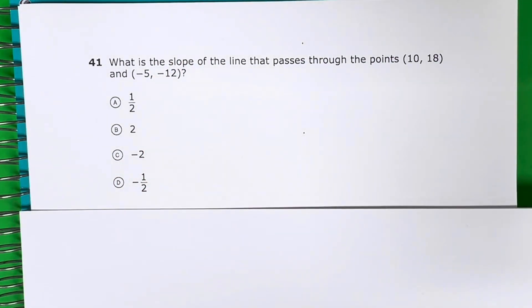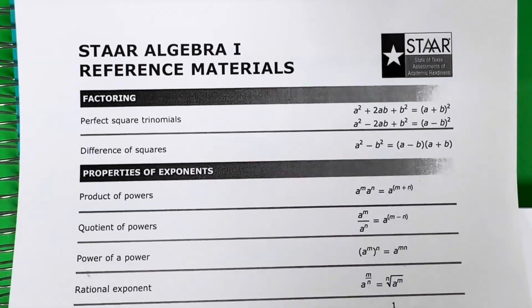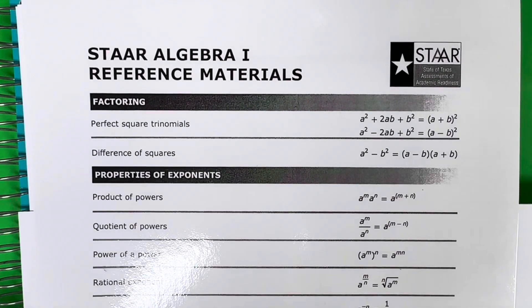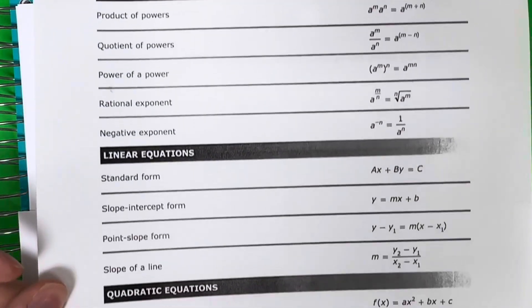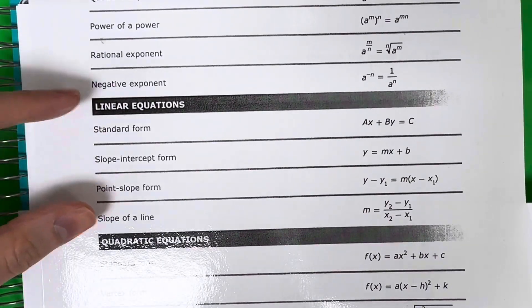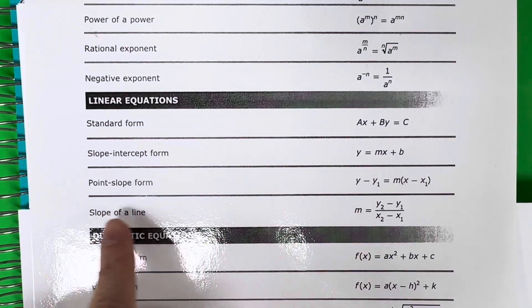We're going to need to find the slope of two ordered pairs, and there's a formula for that. Take a look at your reference materials. The slope formula is in the third section right here, called slope of a line.